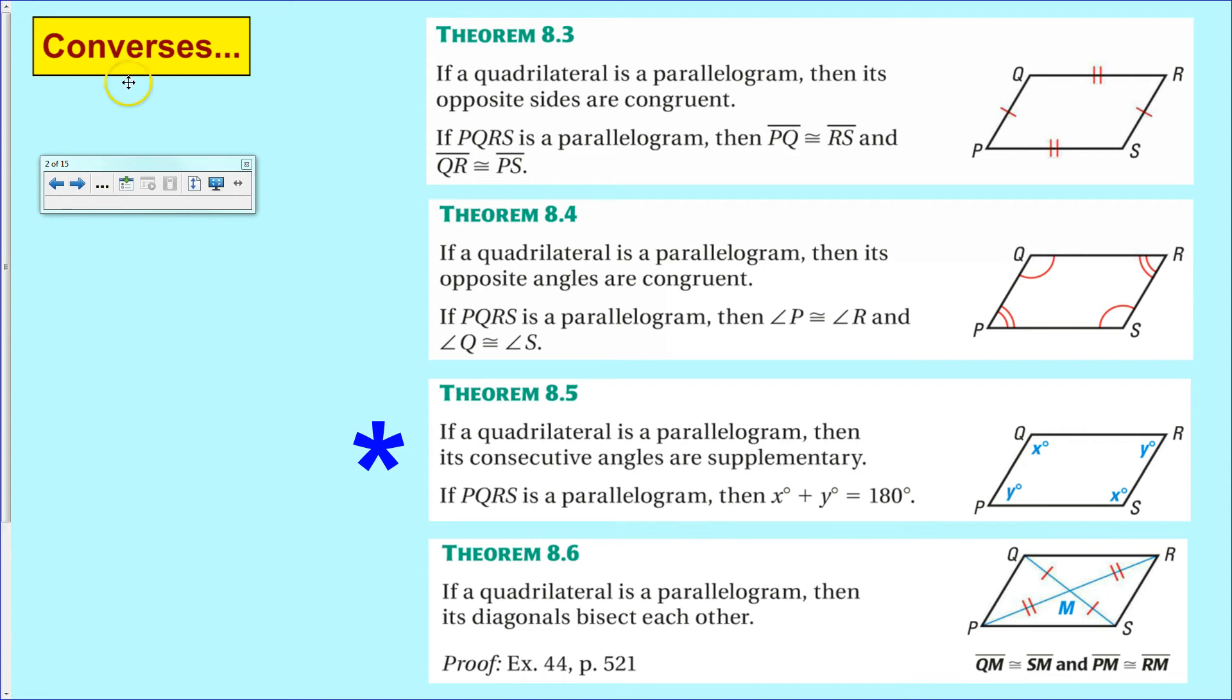So basically we're going to take each one of these statements and reverse the order of it. If you can show that it's got two pairs of congruent opposing sides, parallelogram. If you can show that it's got two pairs of opposing congruent angles, it's a parallelogram.